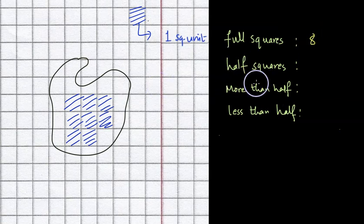Now what about exactly half squares? Because this is an irregular shape, there is no exactly half square.